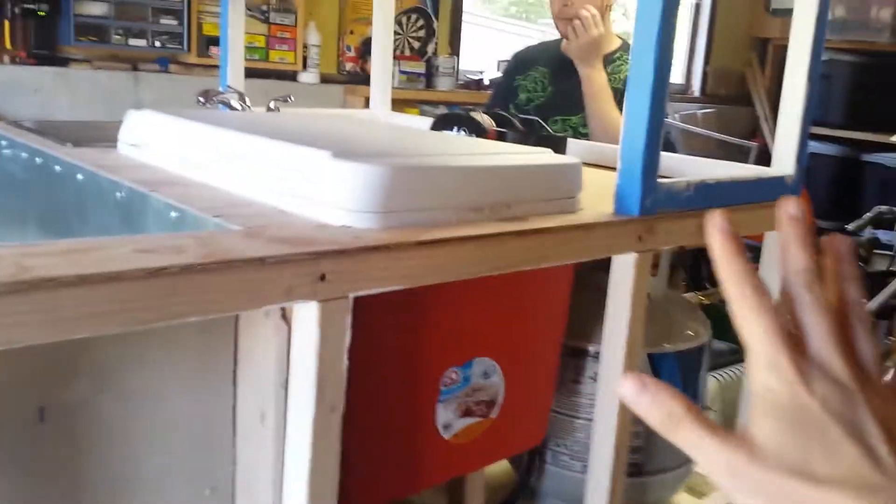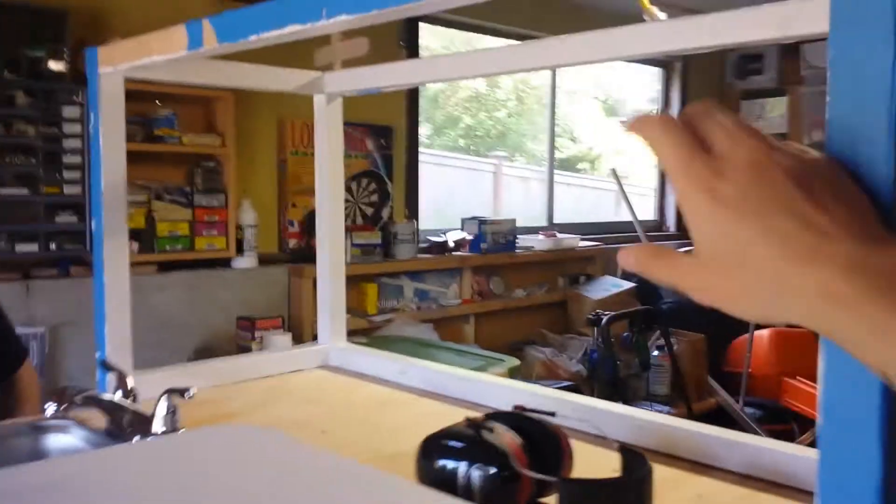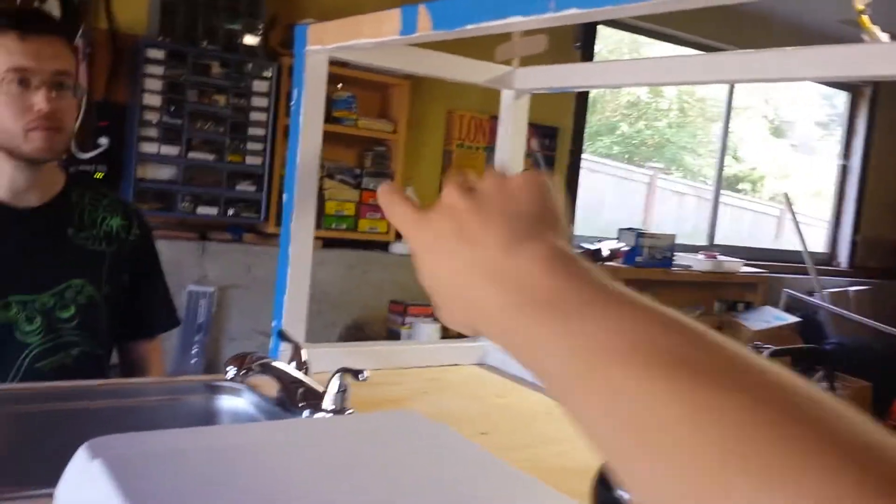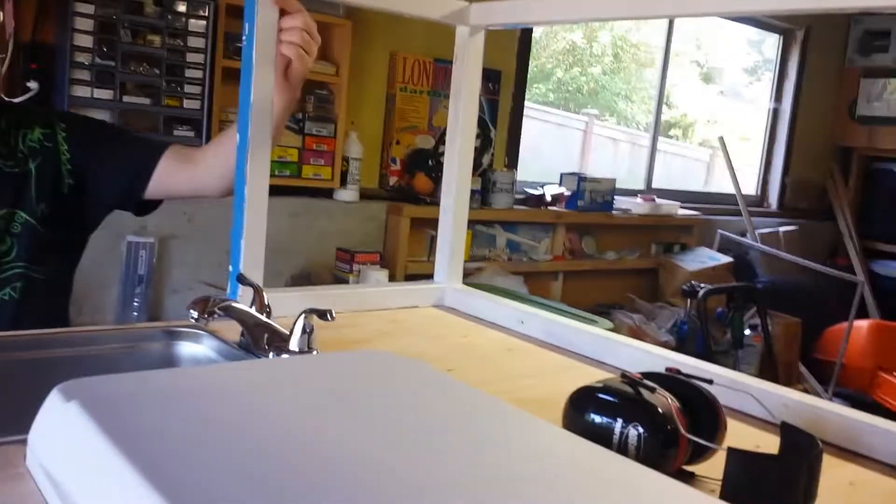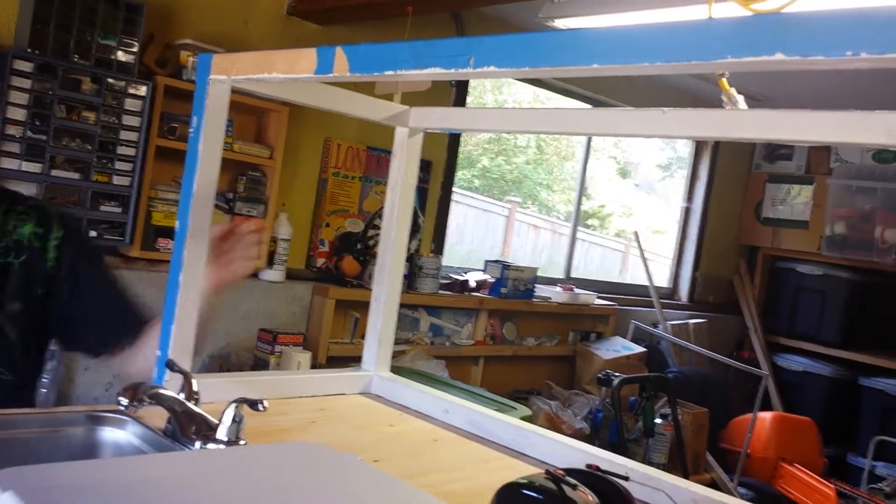This is all going to be vinyl siding paneling right here. We're going to have siding covering all around, and the rear back here will be covered. This will have sliding glass doors that you can open and close right over here. I'll have to install a little track on the inside. So that's the progress so far.